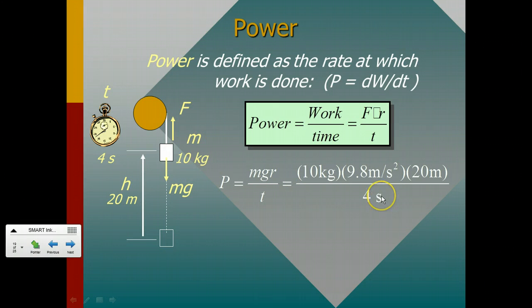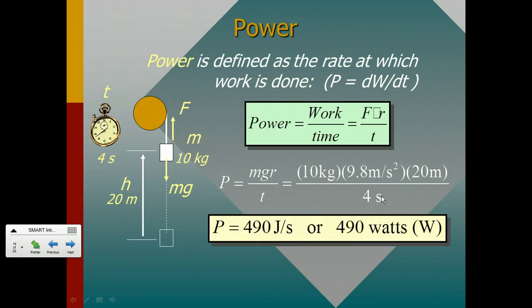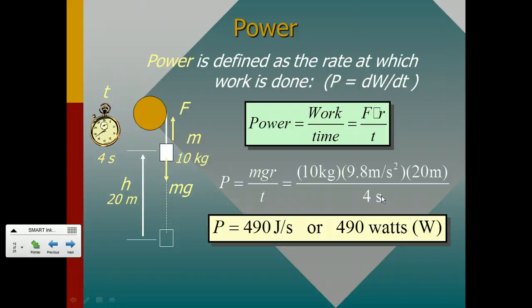So 10 times 9.8, the height is 20 meters, and the time is 4 seconds. So the power required by this particular pulley is 490 joules per second, because work is joules.